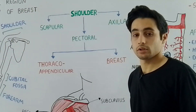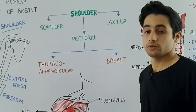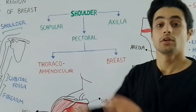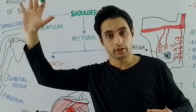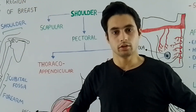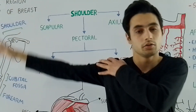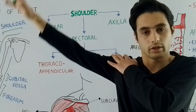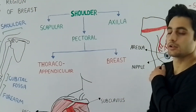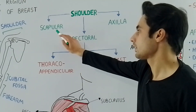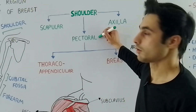The shoulder region connects the upper limb — your upper appendages — with the trunk. That is why the shoulder is very important. It is divided into three main parts: the scapular part, the pectoral part, and the axilla part.